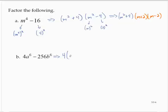4 times a to the sixth minus, now 256 divided by 4 is 64, so 64b to the sixth.